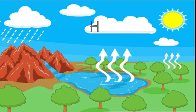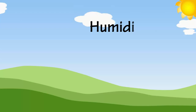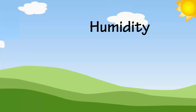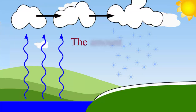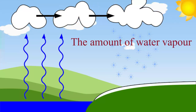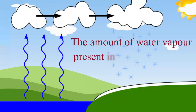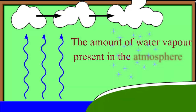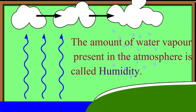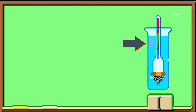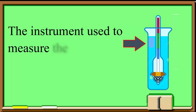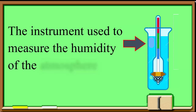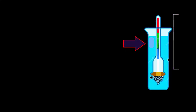The amount of water vapor present in the atmosphere is called humidity, and the instrument used to measure the humidity of the atmosphere is called a hygrometer. Let us now know about the weather.